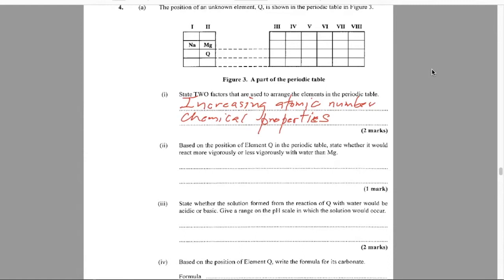Part 2. Based on the position of element Q in the periodic table, state whether it would react more vigorously or less vigorously with water than magnesium. We're just going to use simple language and get straight to the point. It's below magnesium, so we know reactivity increases down the group for metals. So as a result, it would react more vigorously.